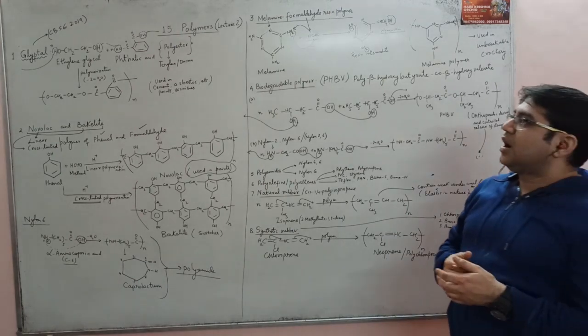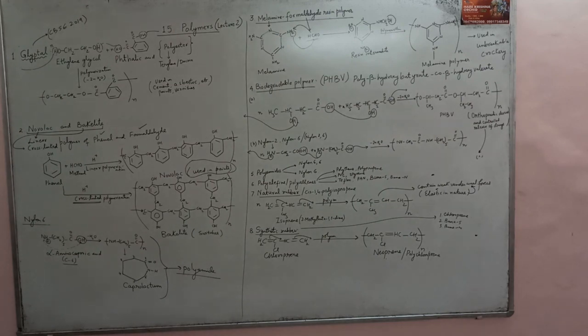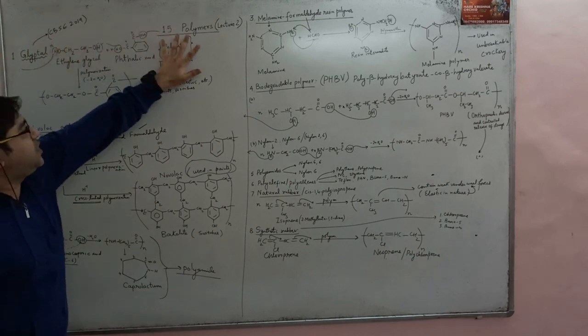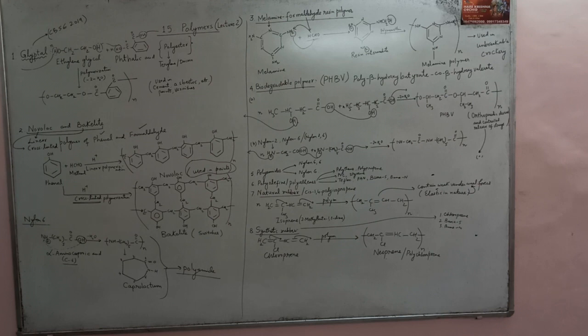Before proceeding, let me recap the examples covered in lectures one and two. The five examples of condensation polymers are: Terylene/Dacron (polyester), glyptal (polyester), phenol-formaldehyde — novolac and bakelite, and melamine formaldehyde resin. Now let us proceed to the next topic: biodegradable polymers.